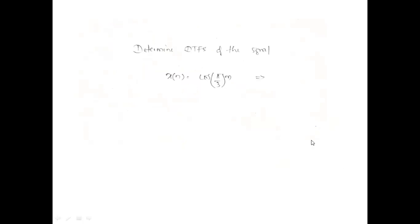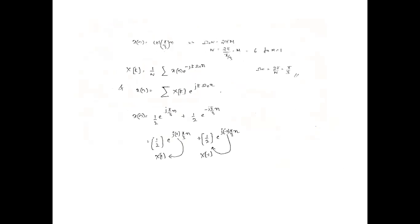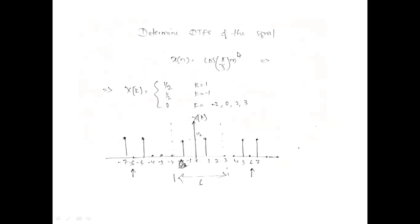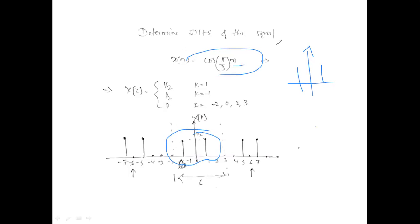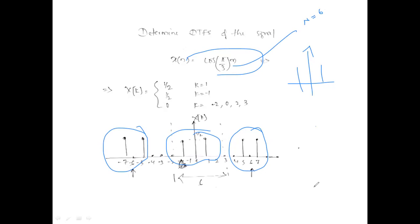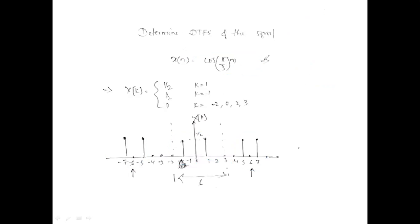Similarly, for a cosine signal in DTFS, you again get two impulses (one left, one right), just like in the continuous-time case. But here the period is N = 6, so the two impulses repeat periodically: the same pattern appears from -6 to -2 to +3, repeating every six samples. That is the key difference of DTFS versus continuous-time Fourier series.